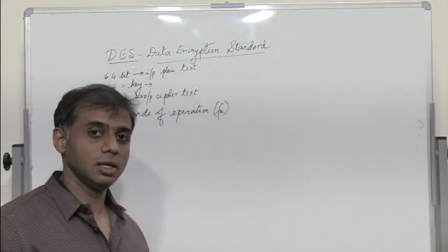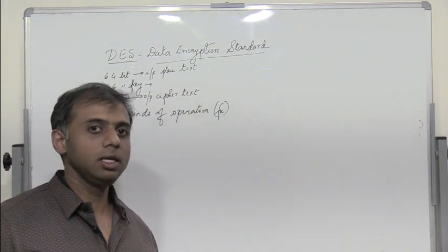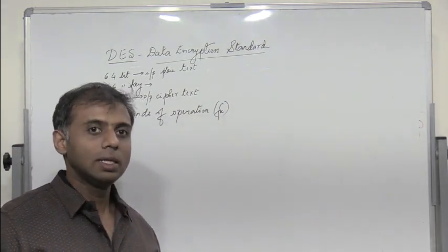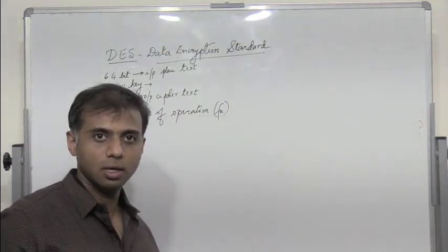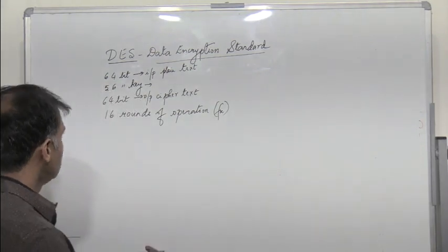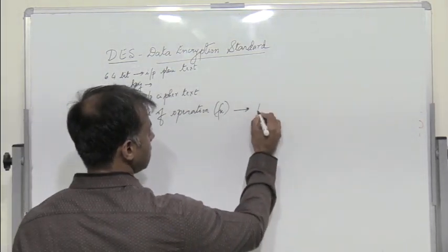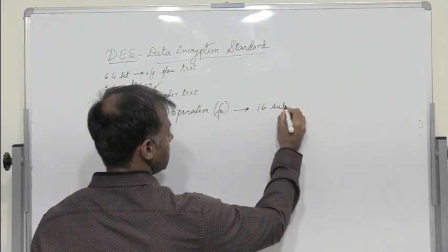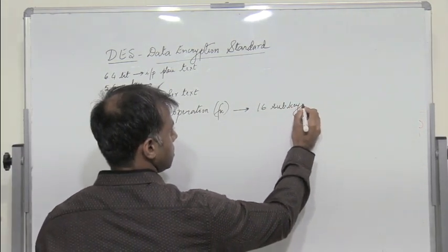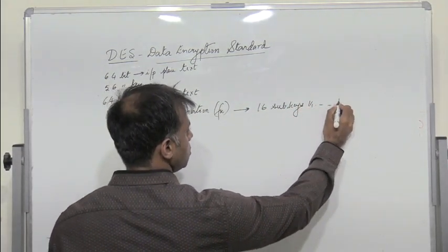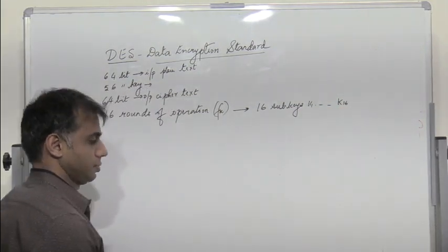We have seen that in SDES, there are two rounds of operation and each round of operation would need one sub-key. So since there are 16 rounds of operation, we need 16 sub-keys. So let me call that as K1 to K16.